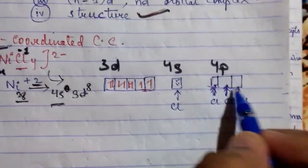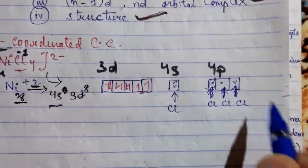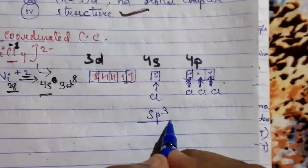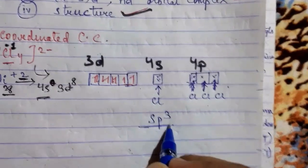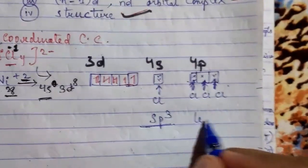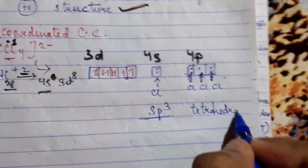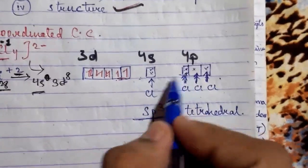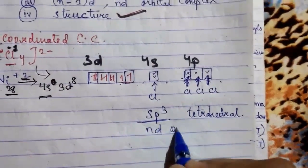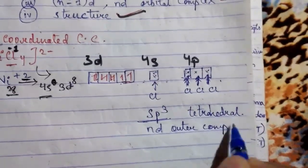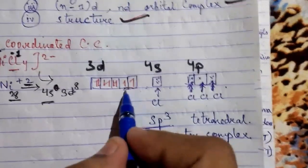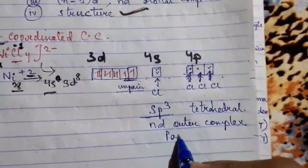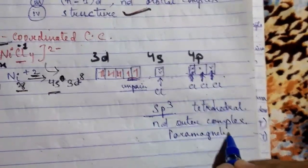There are 4 ligands giving 1s and 3p orbitals — sp³ hybridization. So the hybridization is sp³, the structure is tetrahedral, and this is an outer orbital complex. The unpaired electrons make it paramagnetic.